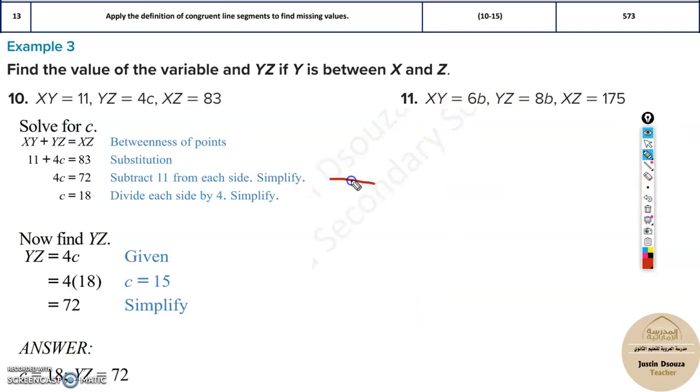Let me just draw the diagram over here for this. So X and Z. Now they have given you Y is the midpoint. So XY is known. The total distance is known, that is 175. And XY is known to be 6b, and YZ is known to be 8b.